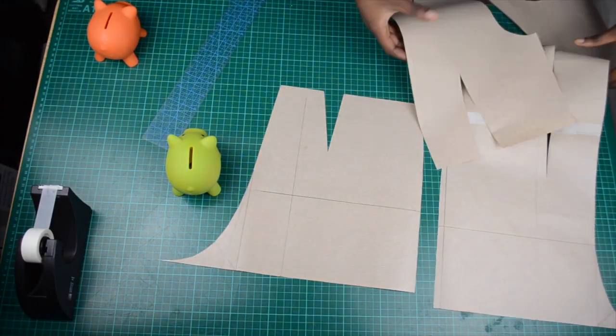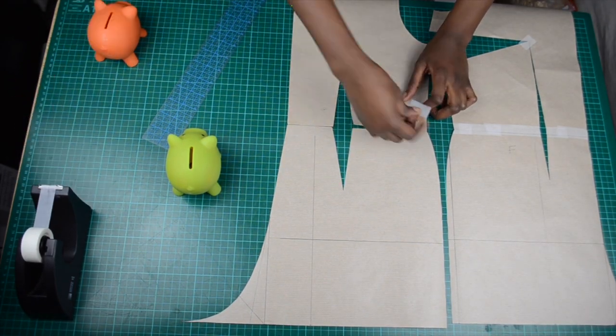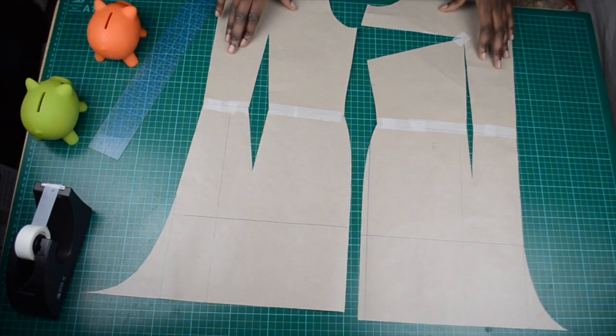Do the same for the back pieces, which should be much easier. You should then have something that looks like this.